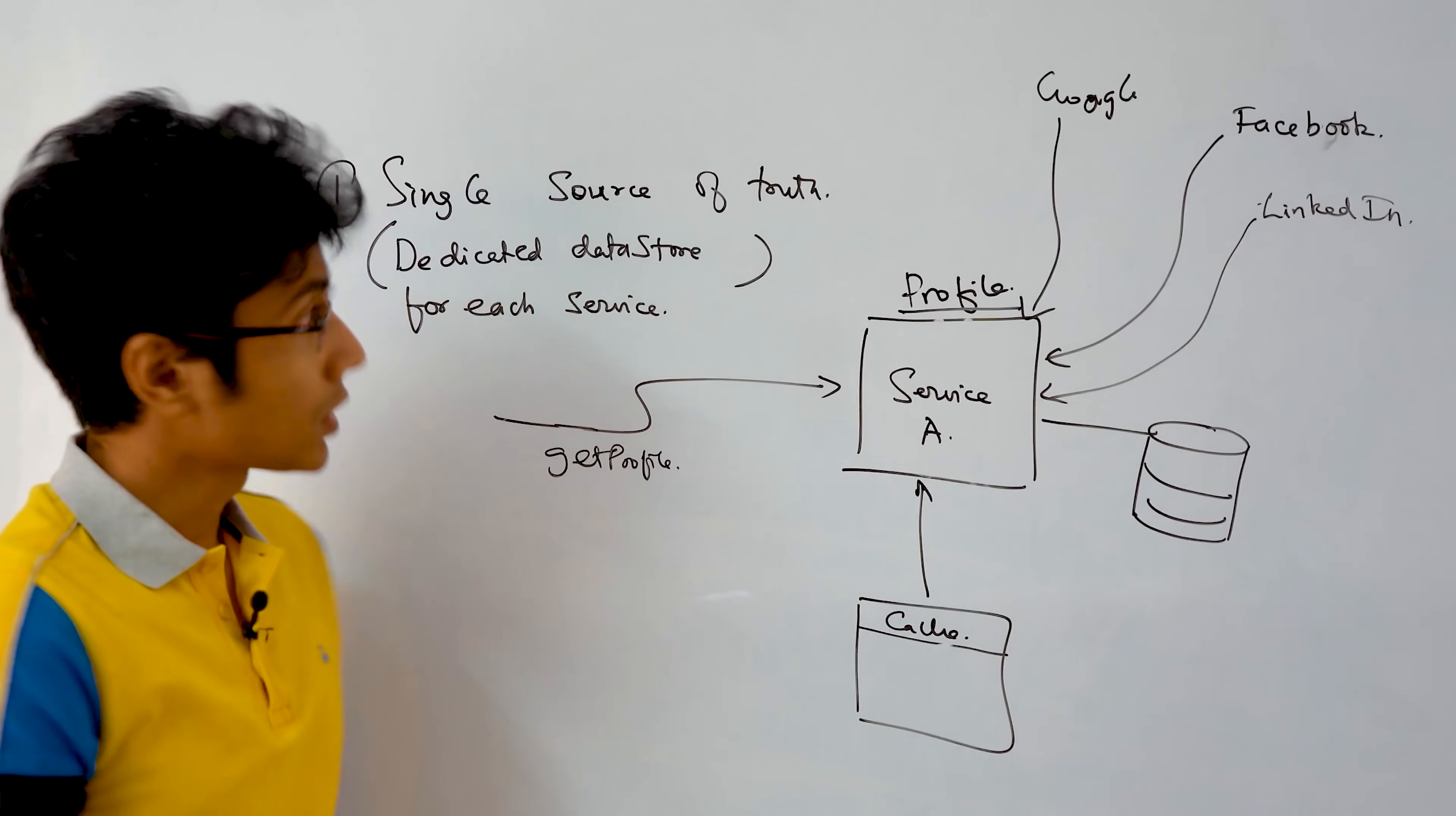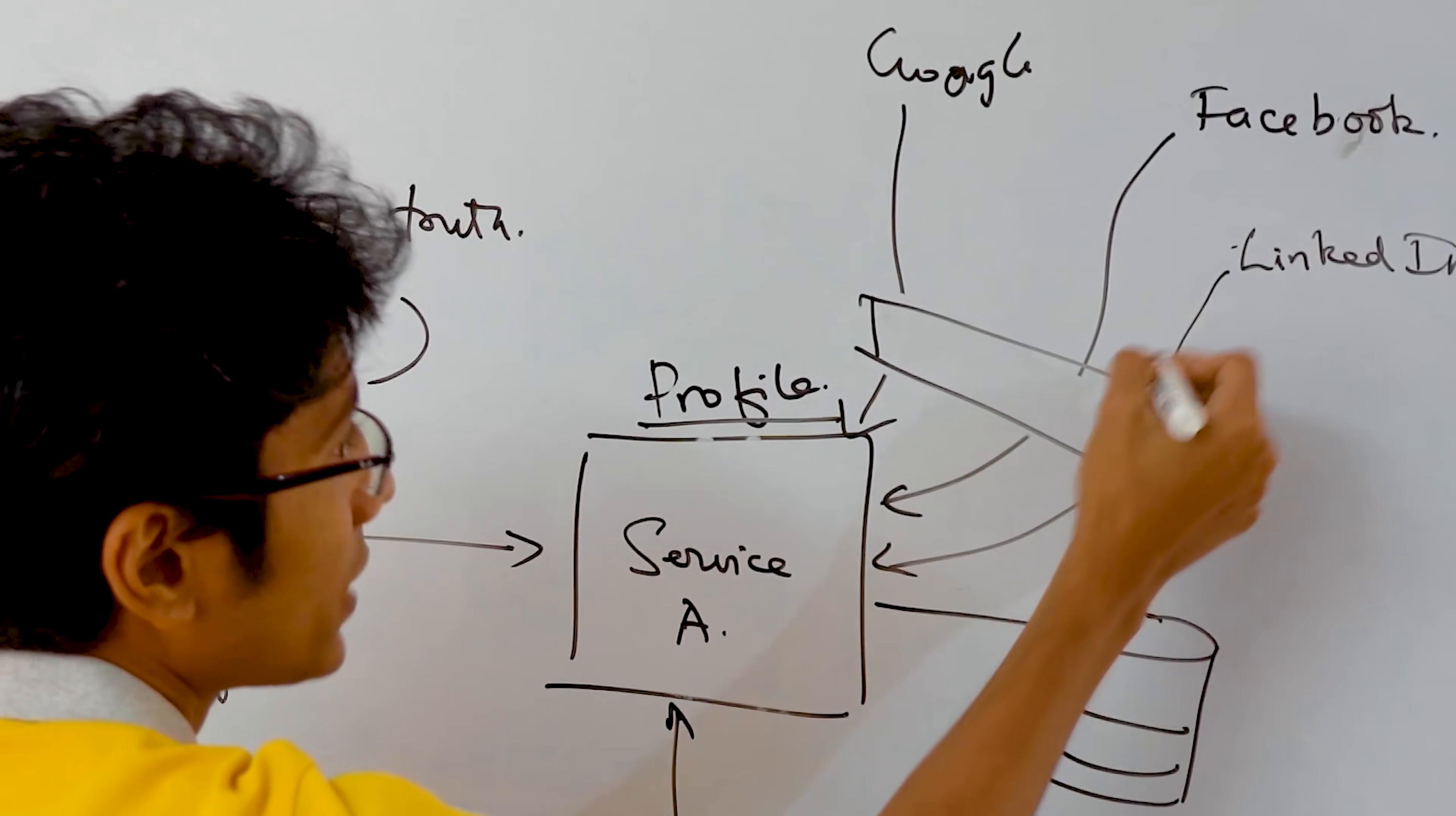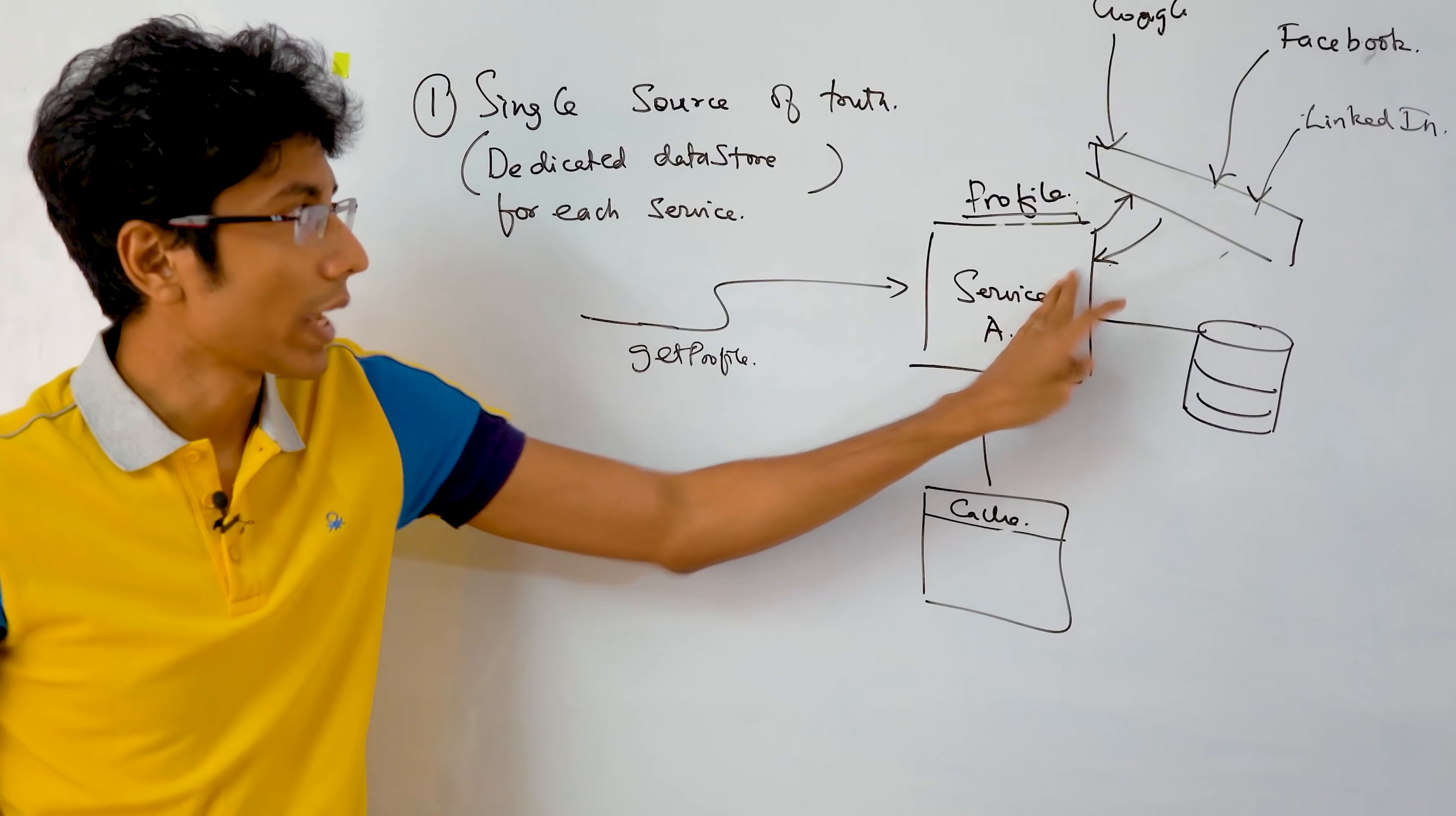So these are external services. They are giving you information in the profile service. You might feel like, hey, it's not the profile service job to take this information. I will create a separate service here, which is going to be condensing all this info from the three external services and giving me a single response. So the profile service talks to this service, which is an intermediary, which talks to external services. And then the response is sent back. This might seem like a good idea, but the question to ask is that,